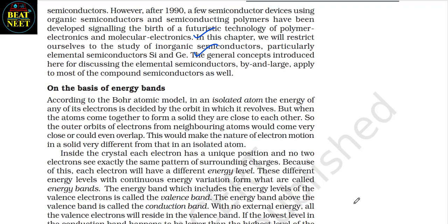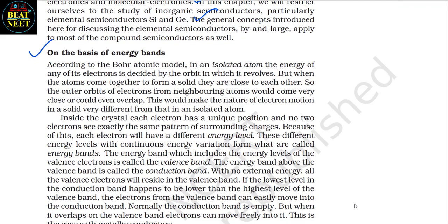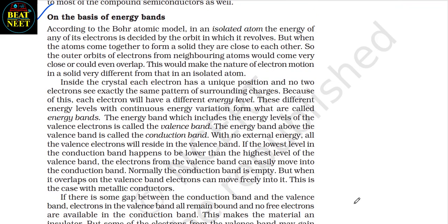In this chapter we will restrict ourselves to the study of inorganic semiconductors, particularly elemental semiconductors silicon and germanium. The general concepts introduced here for elemental semiconductors largely apply to most compound semiconductors as well. On the basis of energy bands: according to the Bohr atomic model, in an isolated atom the energy of any of its electrons is decided by the orbit in which it revolves. But when atoms come together to form a solid, the outer orbits of electrons from neighboring atoms come very close or could even overlap, making the nature of electron motion in a solid very different from that in an isolated atom.